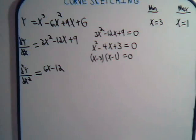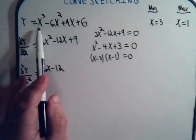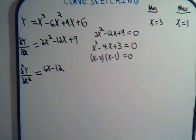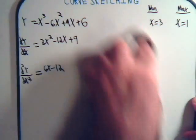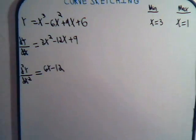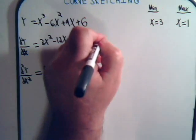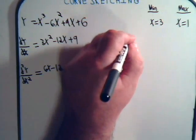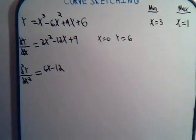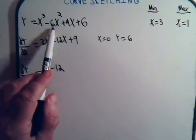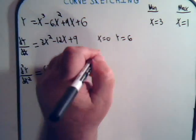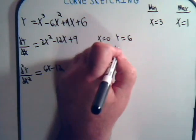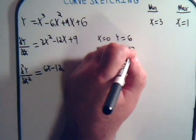And also, let's see, when x is 0, y will be 6. So, let's just write down some numbers. x equals 0, y equals 6, x equals 1, 1 minus 6 plus 6, 1 plus 9 is 10. y equals 10 for our maximum point.